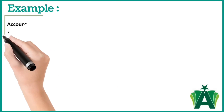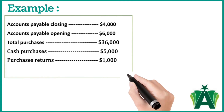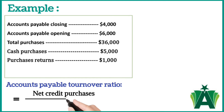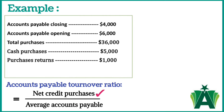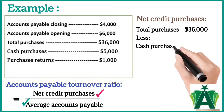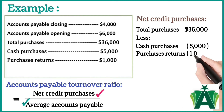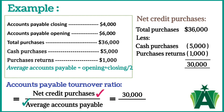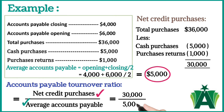From the following particulars, calculate the Accounts Payable Turnover Ratio. The formula is net credit purchases divided by average accounts payable. In this question, both net credit purchases and average accounts payable are not given, so we calculate both. Cash purchases and purchase returns are subtracted from total purchases to find net credit purchases, which is $30,000. Average accounts payable is $5,000. The accounts payable turnover ratio is 6 times.